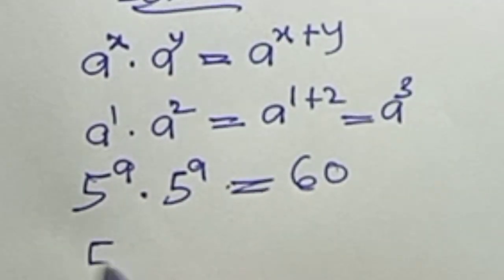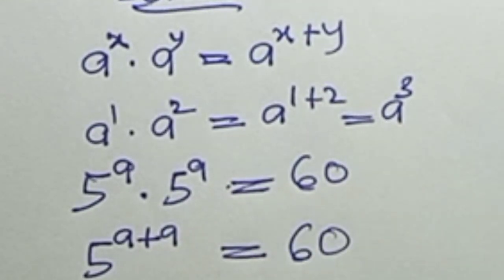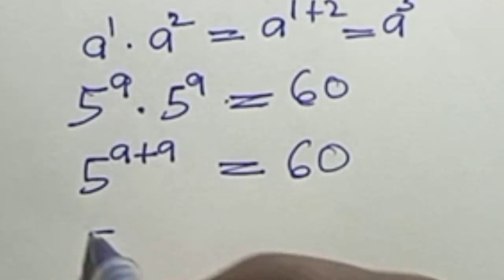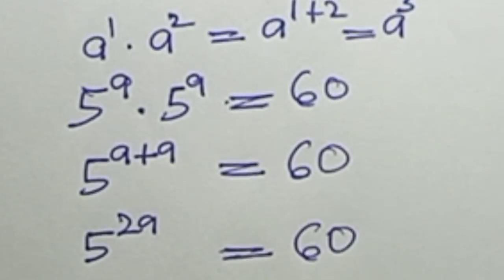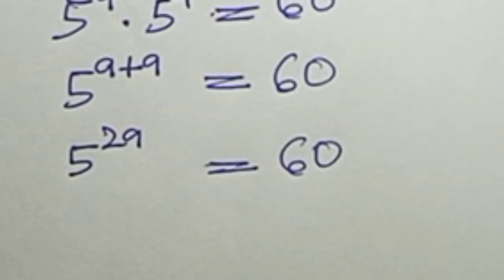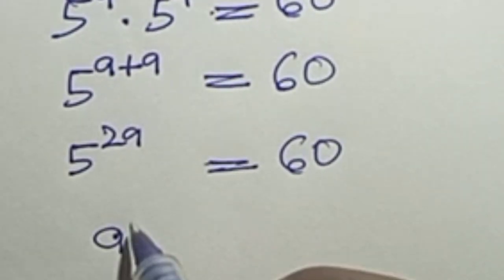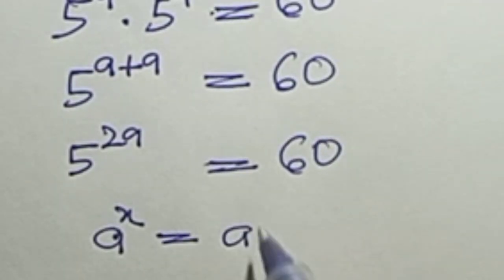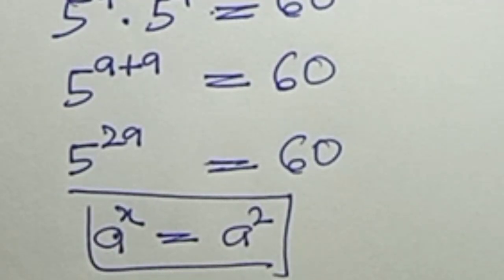5 raised to power a plus a equals 60, and a plus a is 2a. So 5 raised to power 2a equals 60. From this we have a learning exercise: if a raised to power s equals a raised to power 2, we can see s equals 2.